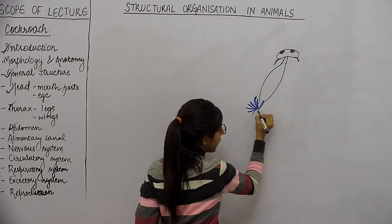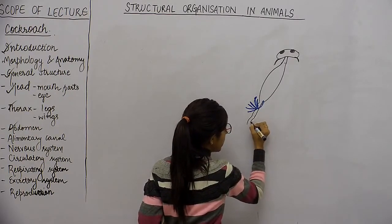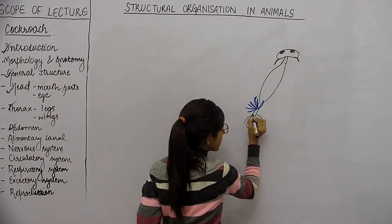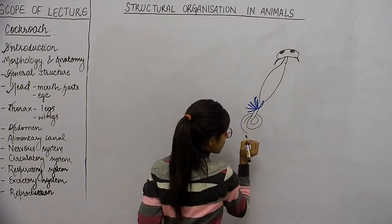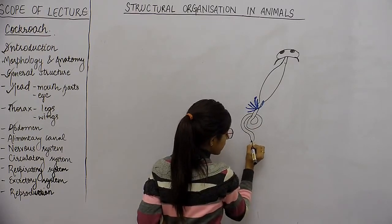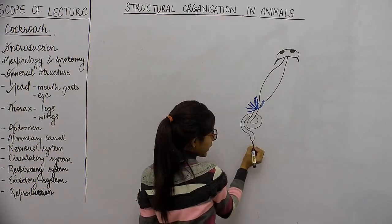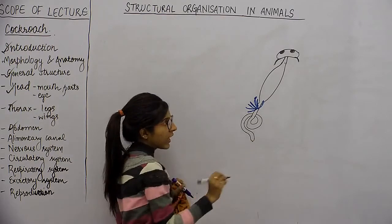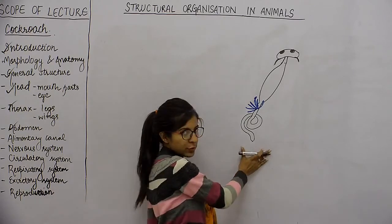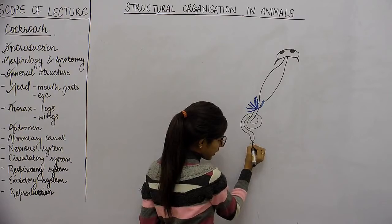Yahan se midgut start hota hai. Midgut kaafi thin hota hai and it coils. Midgut ke khatam hone pe — this is the junction of midgut and hindgut. Hindgut yahan se start hota hai.